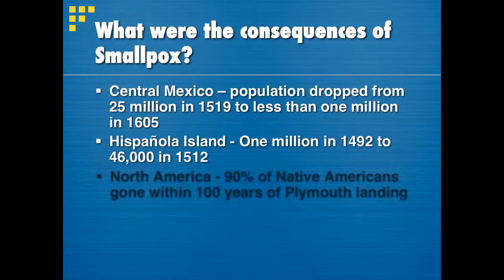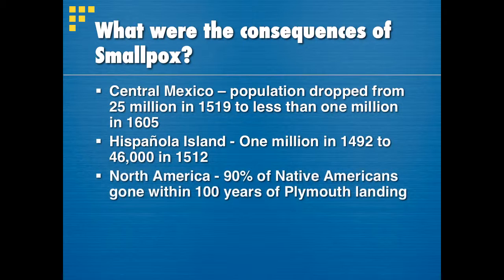On Hispaniola Island, where Christopher Columbus first landed, there were 1 million natives in 1492. That number dropped to 46,000 by 1512 — only 20 years — and the reason was disease. In North America, 90% of Native Americans were gone within 100 years of the Pilgrims landing on Plymouth Rock in what is now Massachusetts. These statistics are concerning, they're real, and they do a lot to explain the true consequences of the Columbian Exchange.